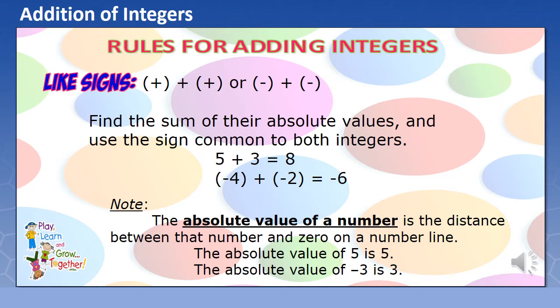Take note, the absolute value of a number is the distance between that number and 0 on a number line. For instance, the absolute value of positive 5 is 5 because the distance of positive 5 in the number line from 0 is 5. The absolute value of negative 3 is also positive 3 since negative 3 is 3 units away from 0.